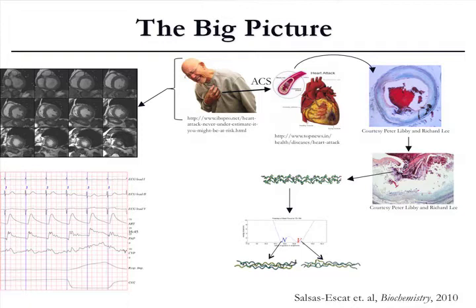Before, the lumen of the vessel was this wide. After this plaque rupture, you had this clot, so the lumen of the vessel is effectively decreased suddenly. We've done a number of studies looking at the etiology of this rupture event, which involves collagen being degraded. We've done computational studies to understand the fundamental biochemical mechanism of collagen degradation.